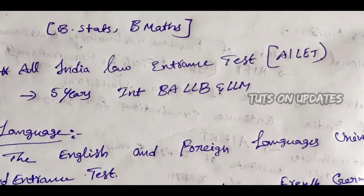There is also the AILET — All India Law Entrance Test. Through this test, you can get admission into the 5-year integrated BA LLB and LLM programs, completing both undergraduate and postgraduate law degrees together. Candidates interested in law-related courses should attempt both CLAT and AILET examinations.